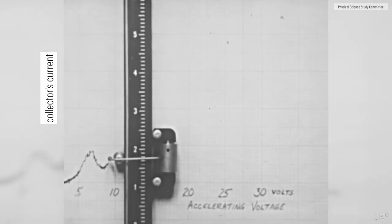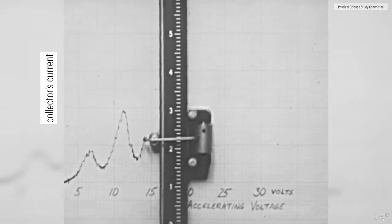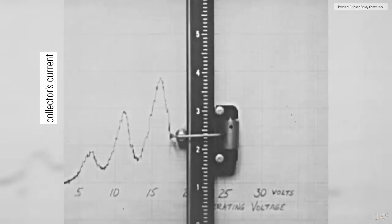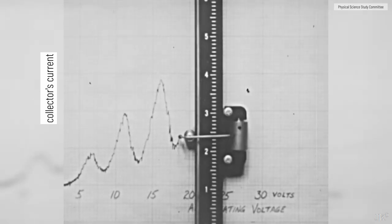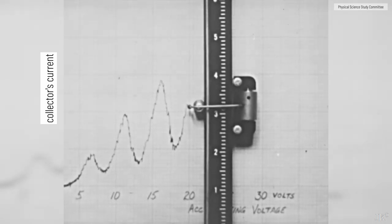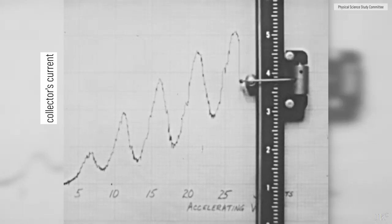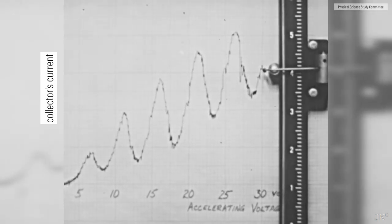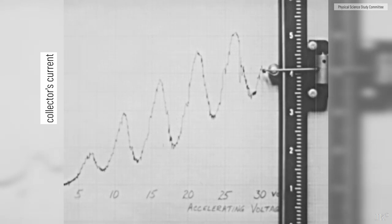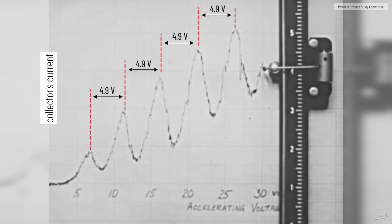Once more, the current begins to rise, another decrease, a big one this time, and then another increase. The peaks seem to be just about 5 volts apart. Let's see if this continues. And now we're up to the 30 volts, which is the maximum that I want to put between the grids. The experiment shows that the drops occur at regular intervals of 4.9 volts.